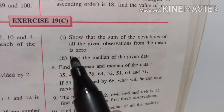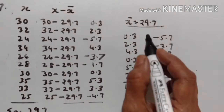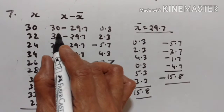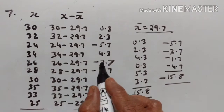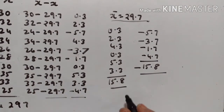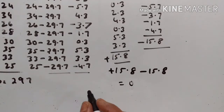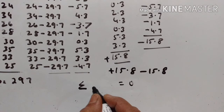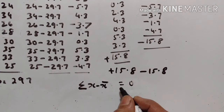Show that the sum of the deviations of all the given observations from the mean is 0. The mean is equal to 29.7. Observation minus mean equals deviation. The sum is equal to 15.8 plus 15.8 and minus 15.8, which is equal to 0. Therefore, sum of the deviations of all the observations from the mean is 0.